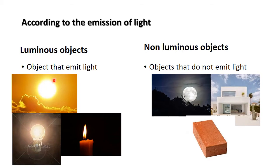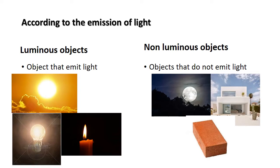Examples of luminous objects are the sun, a lighted bulb, and a lighted candle. Examples of non-luminous objects are the moon, houses, bricks, animals, birds, etc. You should remember that a lighted candle and lighted bulb are luminous objects, but a candle or bulb by themselves are non-luminous objects.